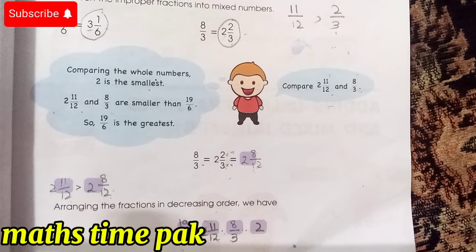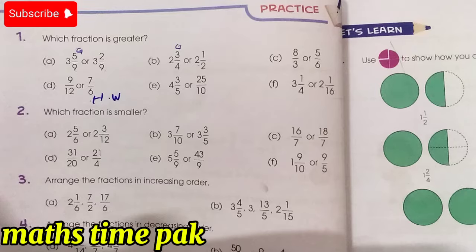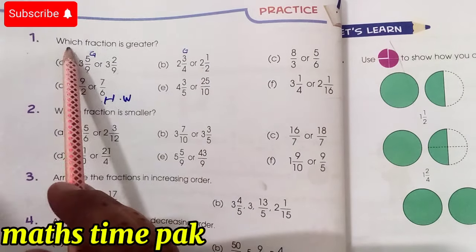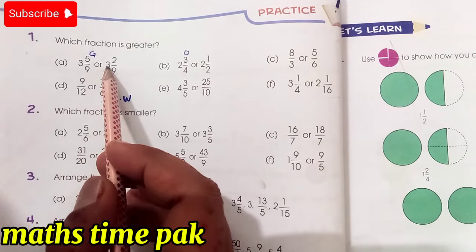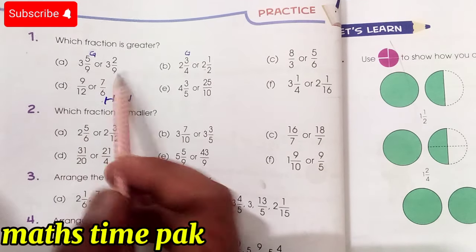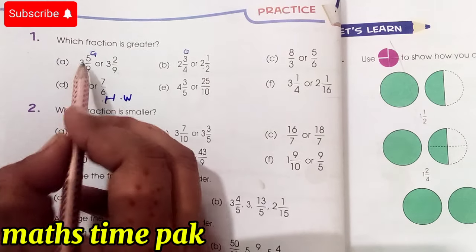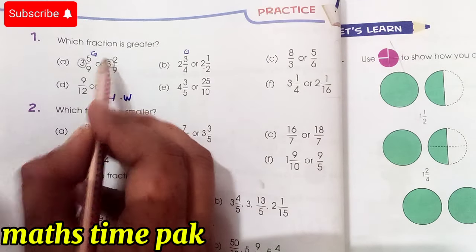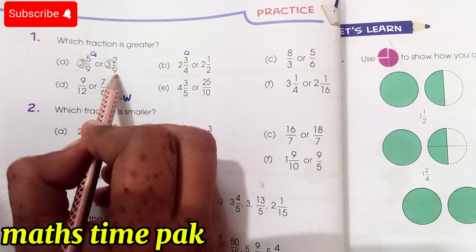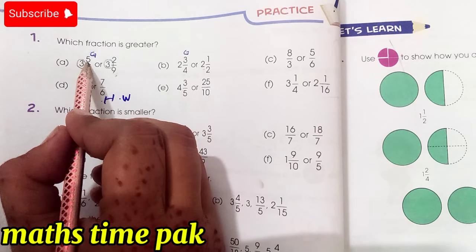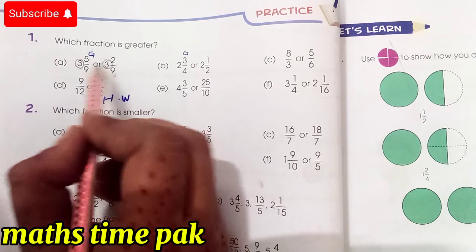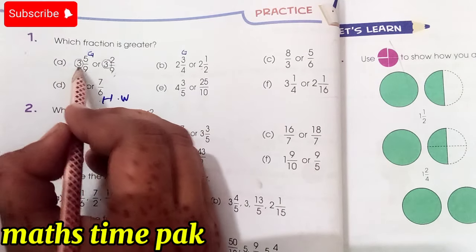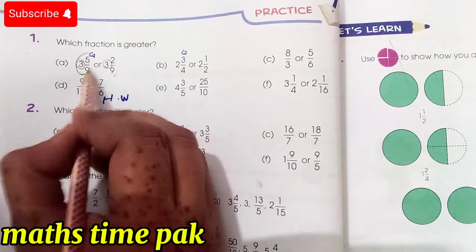Now we have our practice exercise on page 46, updated edition. Question number 1: which fraction is greater? Part A has 3 5/9 and 3 2/9. The whole numbers are both 3, and the denominators are the same. So we compare numerators: 5 is greater than 2, so 3 5/9 is the greater number.